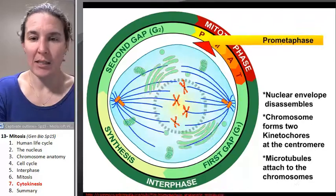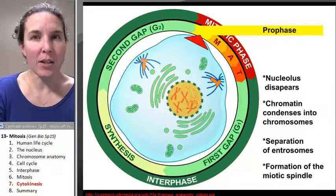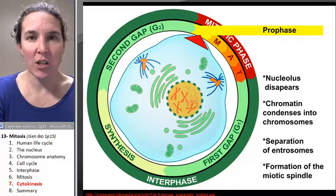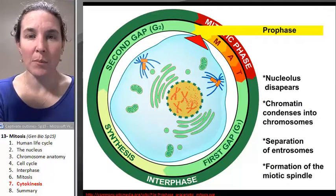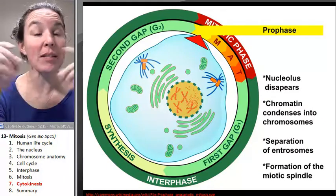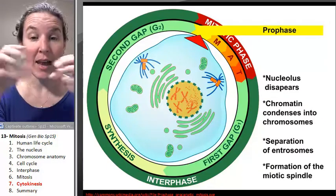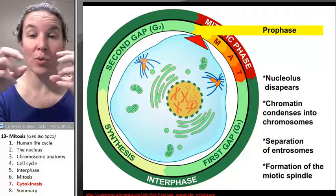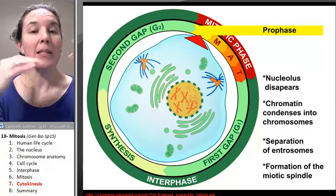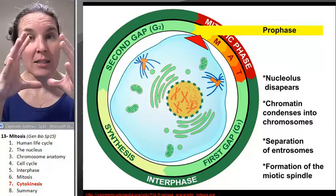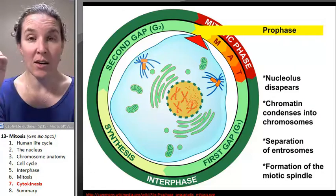Cytokinesis is essentially the division of the whole cell. Mitosis divided our nucleus and now we've got two identical nuclei. Cytokinesis divides the cell itself.